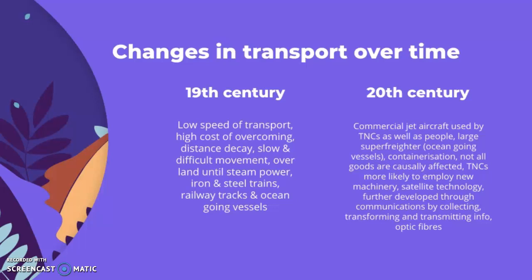In the 19th century there was low speed of transport, high cost of overcoming distance decay, and slow overland movement — until steam power, iron and steel trains, railway tracks, and ocean-going vessels became the main sources of large transport. In the 20th century, commercial jet aircraft was used by TNCs and people, along with large super-freighters and containerisation.